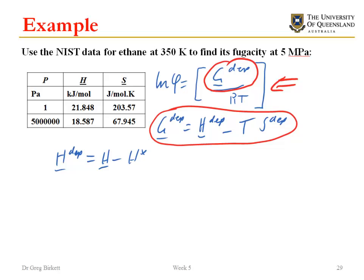My H departure is H real minus H star. From my table up here, I've got my data at 5 megapascals and also at 1 pascal. 5 megapascals is my real data, so my H there is 18.587. And then my ideal enthalpy is that at 1 pascal, so 21.848. That gives me a departure enthalpy of negative 3.261 kilojoules per mole. This is a negative number and this is what I expect. I expect my H departure to be negative as long as the pressure and temperature aren't really really high.